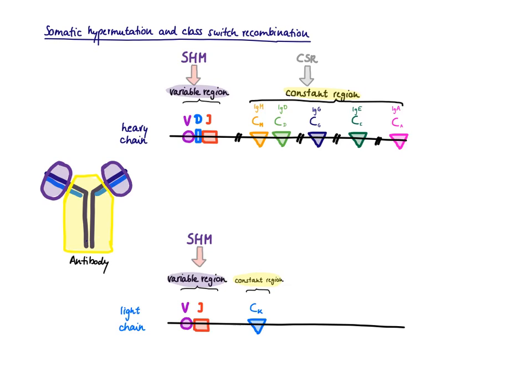Here you can recognize this Y-shaped antibody molecule. It consists of a heavy chain drawn in dark blue and a light chain in light blue. You can also see the variable region in purple and the constant region in yellow.